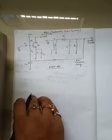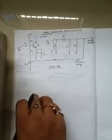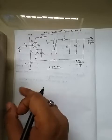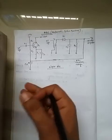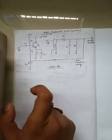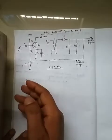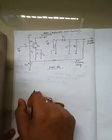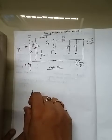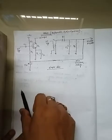For a strong signal, the AGC circuit reduces the gain to maintain the constant output. And for a weak signal, it amplifies or increases the gain to maintain the constant output.